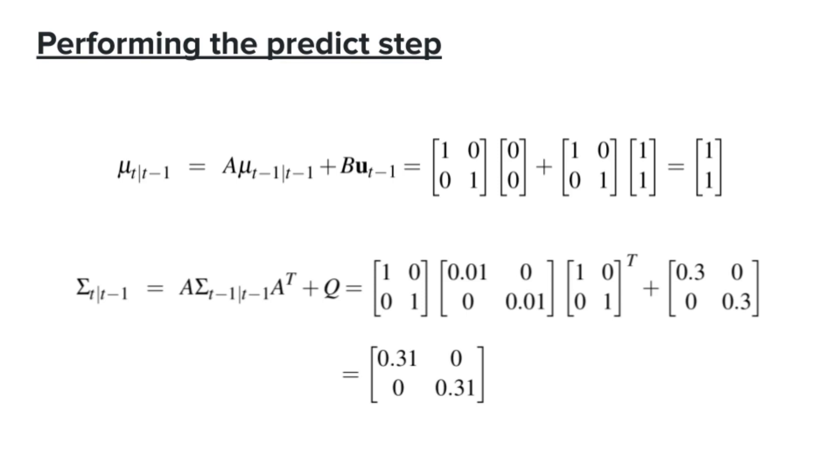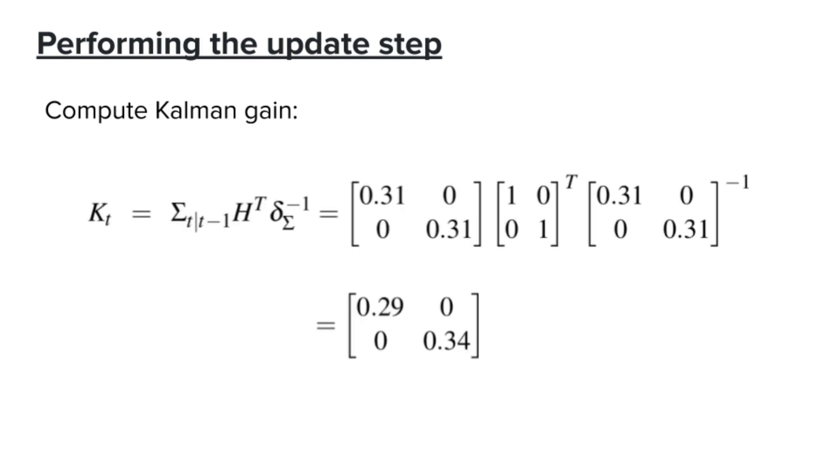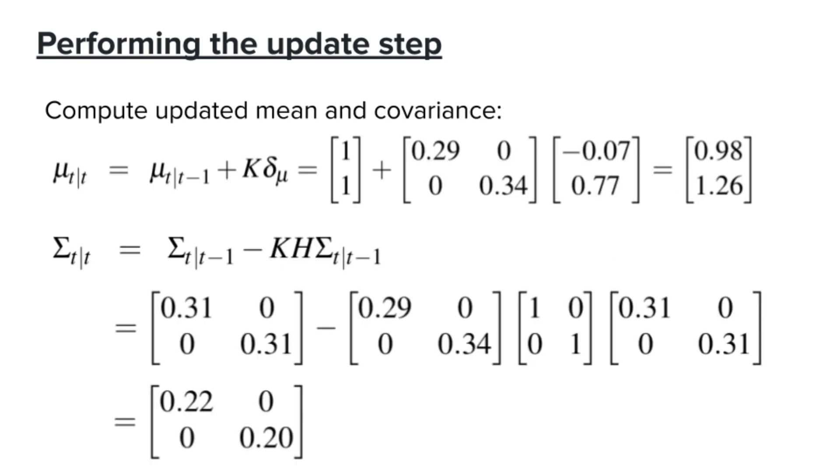First, let's do the prediction step. We literally just take the equation and plug all the available information to that equation, and we'll get this as a new belief of where the robot is currently at. After the prediction step, we take the measurement data and perform the update step. Again, we just need to take all the information we need and plug that into the equations. So first, we compute the residual, and then we compute the Kalman gain, and then we finally compute the new belief. And this is our state estimation after one time step.